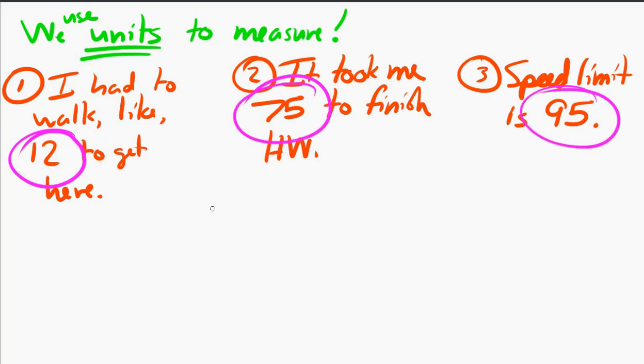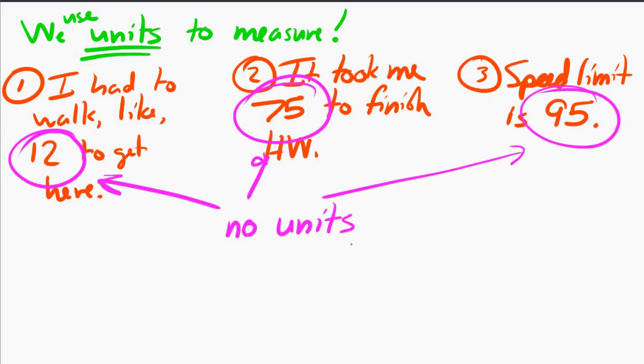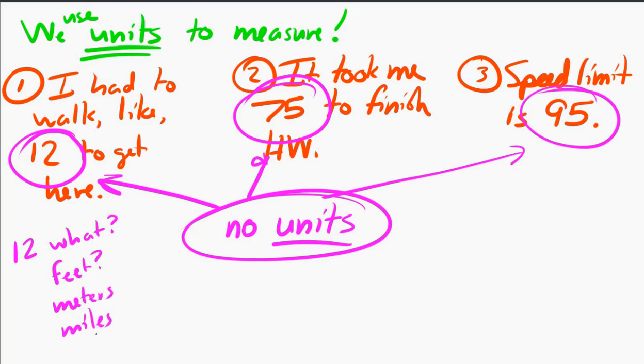And the reason why is they don't have units. Without units, measurements aren't useful. So in that first quote, you had to walk 12, but 12 what? 12 feet? 12 meters? 12 miles? 12 kilometers? 12 light years? We don't know. That's an important piece of information.